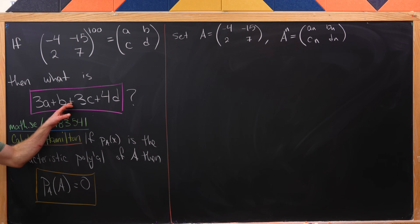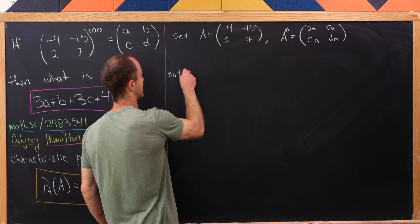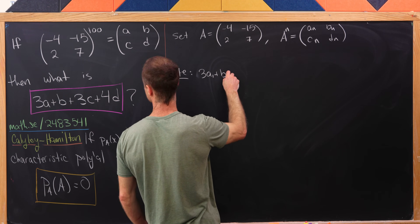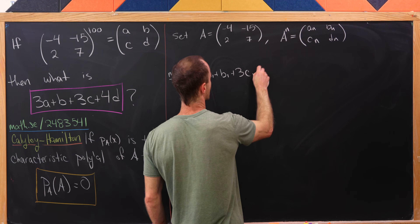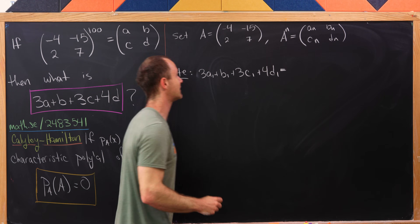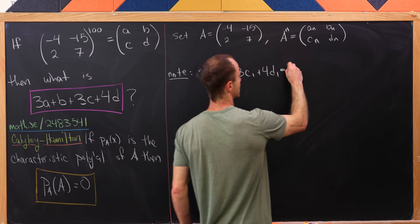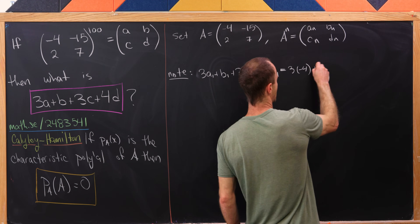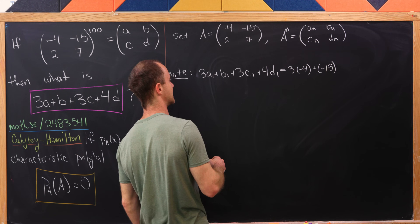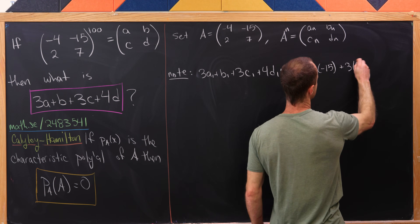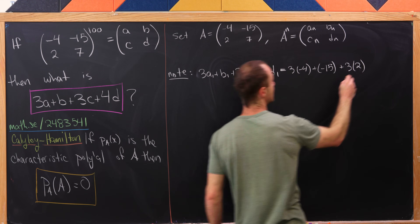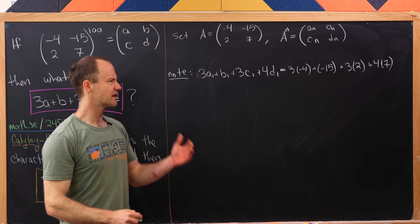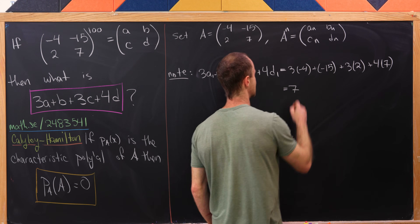Let's calculate this object for A to the first power. So 3A_1 plus B_1 plus 3C_1 plus 4D_1 equals 3 times negative 4 plus negative 15 plus 3 times 2 plus 4 times 7. Combining that all together, we in fact get the number 7.